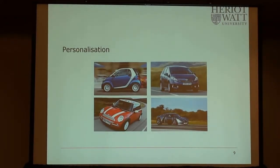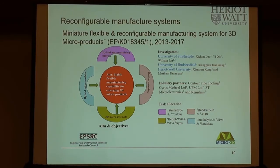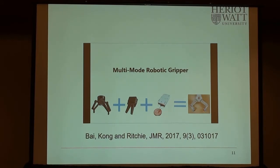The motivation for this work relates to personalization of products. When I visited the UK, I noticed cars of different sizes and shapes—cars there are much smaller than in New Jersey because petrol is expensive and streets are narrow. In 2013, six projects were supported by EPSRC—similar to the NSF here—with two to four million each, one of which focused on reconfigurable manufacturing systems. I'll show a video about combining different grippers into one: a tweezers is used for very tiny objects, and we designed a student project around this concept.